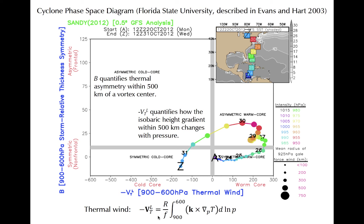Consider the definition of the thermal wind shown at bottom. The thermal wind describes a shear vector — in this case, the change of the magnitude of the geostrophic wind between 900 and 600 millibars. A warm core cyclone, having temperature that decreases moving radially from the cyclone, imposes the condition that the geostrophic wind should decrease with height. In contrast, the primary circulation will increase in magnitude with height in a cold core cyclone.